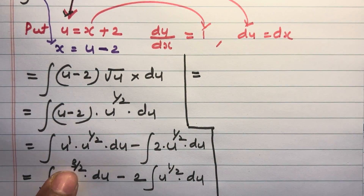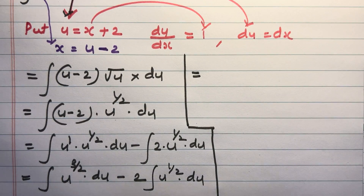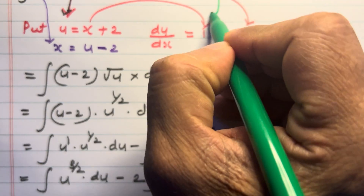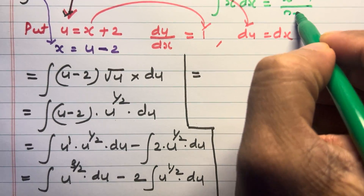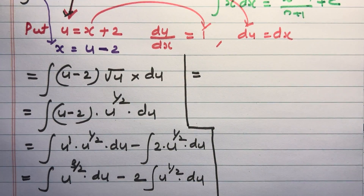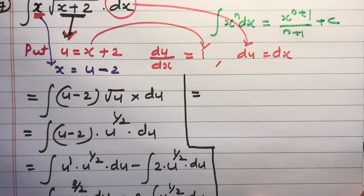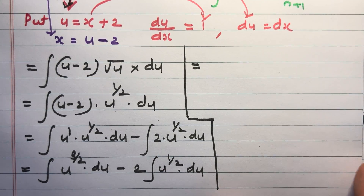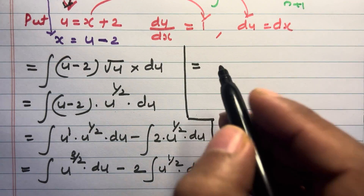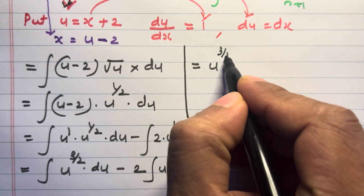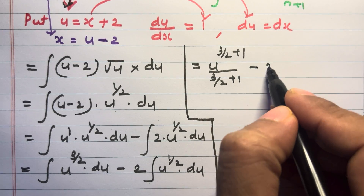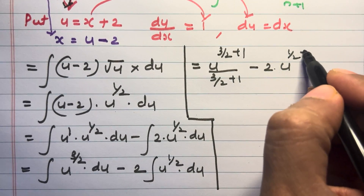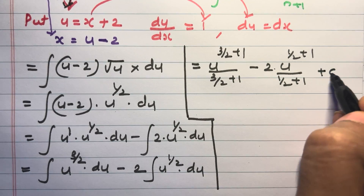Applying the formula — integral of x raised to n dx equals x raised to n plus 1 divided by n plus 1 plus c — we get u raised to 3 by 2 plus 1, divided by 3 by 2 plus 1, minus 2 times u raised to 1 by 2 plus 1, divided by 1 by 2 plus 1, plus c.